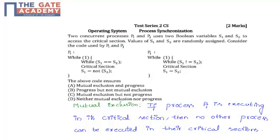Two concurrent processes PI and PJ use two boolean variables S1 and S2 to access the critical section. The values of S1 and S2 are randomly assigned. Consider the code used by PI and PJ.